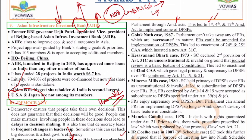In the Golaknath case of 1967, the Supreme Court said parliament cannot take away any fundamental rights because they are sacrosanct. After this, the government enacted the 24th and 25th Amendment Acts and inserted Article 31C. Then came the Kesavananda Bharati case of 1973, where the Supreme Court declared that the government can amend any part of the constitution but it cannot amend the basic structure. The basic structure doctrine was established under this case.